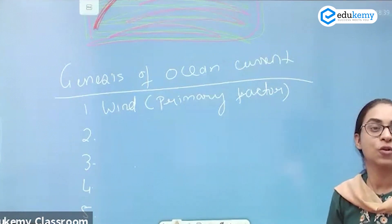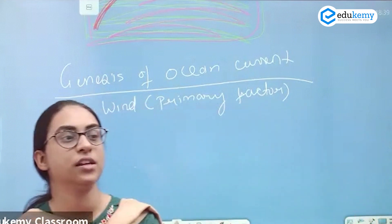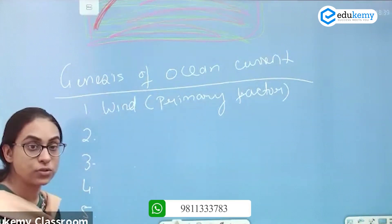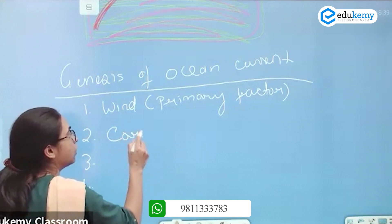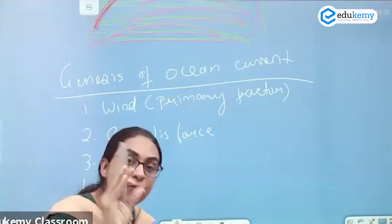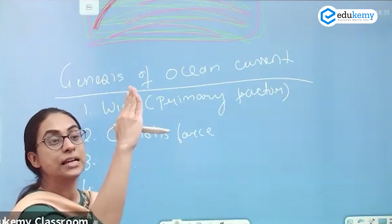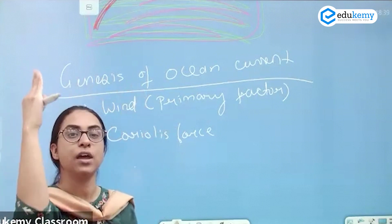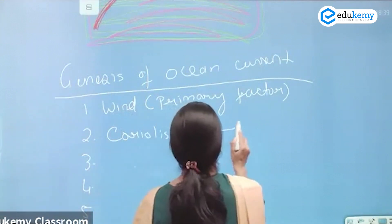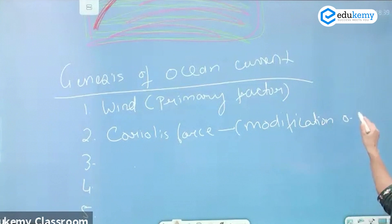Coriolis force — will it generate or will it modify the ocean current? Coriolis force acts on any fluid — whether wind, water, or any fluid. It deflects to the right in the northern hemisphere, whereas there is deflection to the left in the southern hemisphere. So, Coriolis force is a modification force; it modifies the ocean current.